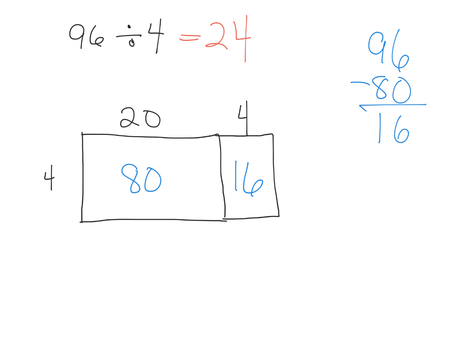Now, a way to show this using the distributive property is we could say, well, let's take that 96 and we can break it up into 80 and 16. We can see that 80 divided by 4 gives us 20, and 16 divided by 4 gives us 4. So our answer is, again, 24.